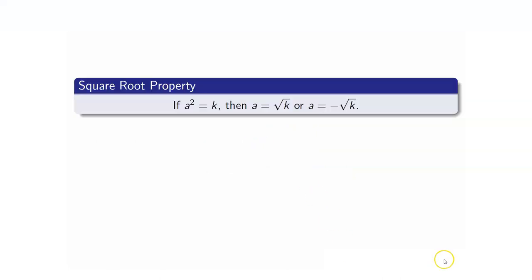The square root property is saying that if the square of a number is equal to a constant, our assumption here is that k must be greater than or equal to 0.